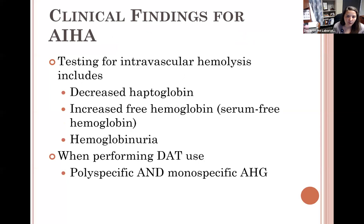For intravascular hemolysis testing, if complement is involved causing immediate cell lysis, you would also see decreased haptoglobin, increased free hemoglobin, and hemoglobinuria. We want to use polyspecific and then monospecific to find out exactly what is coating the patient's cells.